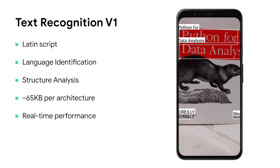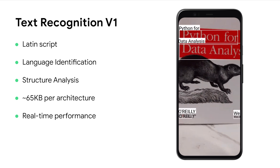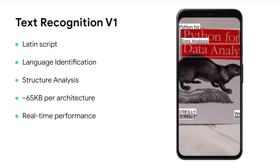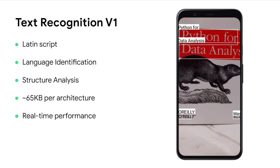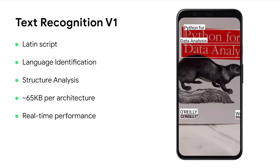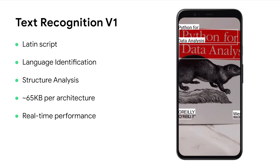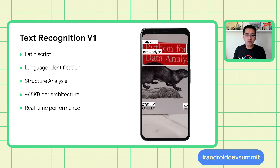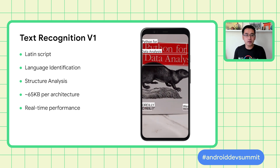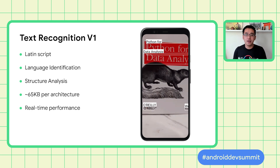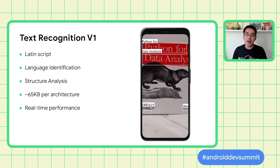Text recognition is one of the most popular APIs on ML Kit. In V1, it enables recognition of text in any Latin-based character set. It can be used to automate data entry tasks such as processing credit cards, receipts, and business cards, with support for real-time processing, and it's around 65 kilobytes per architecture as an unbundled library through Google Play services.